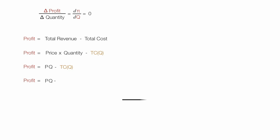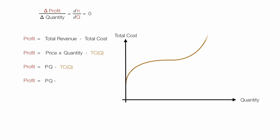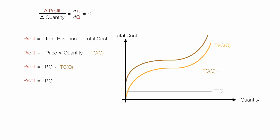Now I'm going to break down total cost into its two components. Total cost as a function of quantity equals total variable cost as a function of quantity plus total fixed cost. So total cost(Q) = TVC(Q) + TFC.